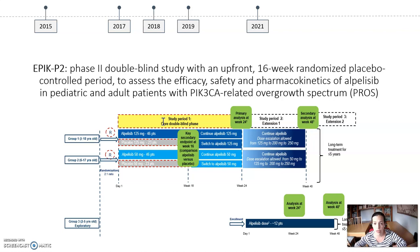In 2021, a clinical trial was started — a double-blind study to assess the efficacy, safety, and pharmacokinetics of alpelisib in PROS patients. This clinical trial is still ongoing.